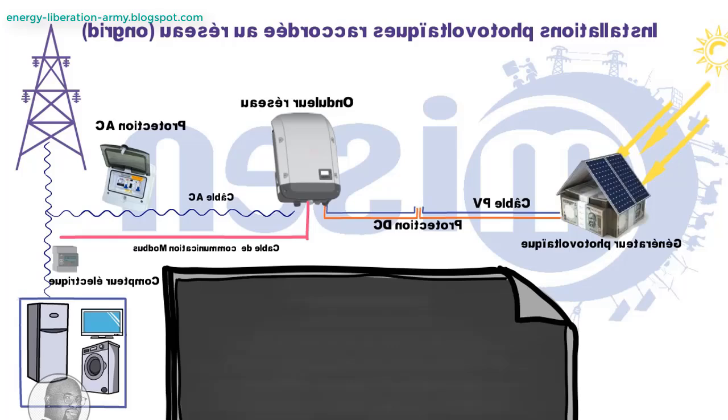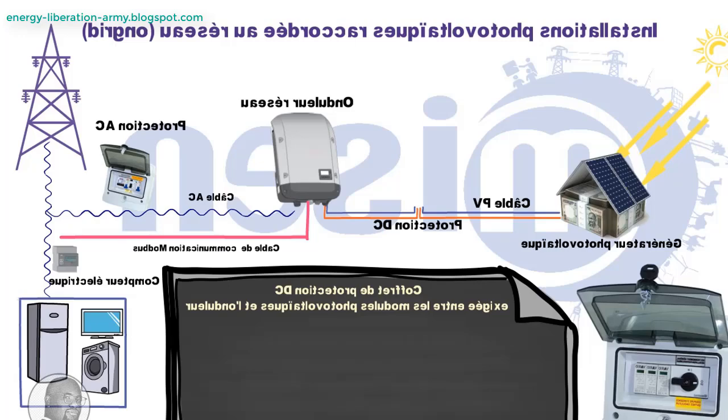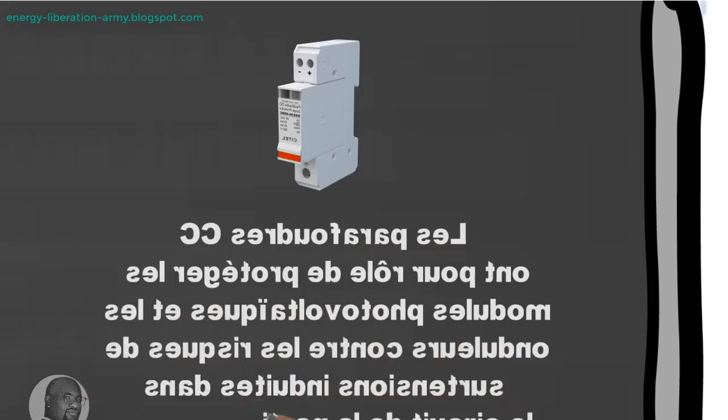Analyzing solar energy's impact on bills: Grid-tied solar power systems are designed to offset electricity costs by generating power during daylight hours, which is then used by the household or fed back into the grid. Theoretically, this should reduce electricity bills significantly, as solar-generated power displaces the need to buy electricity from the utility.